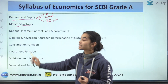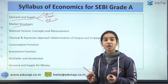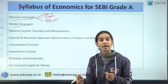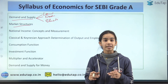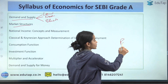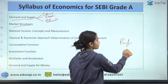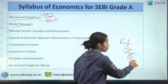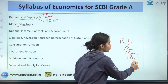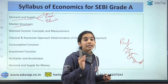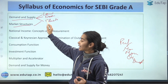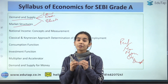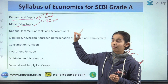Then comes market structure. You just need to understand the characteristics of each market structure: perfect competition, monopoly, monopolistic market, oligopoly, and duopoly. If you understand the characteristics and differences between these markets, that will be enough for the exam.